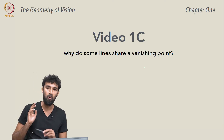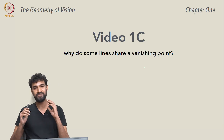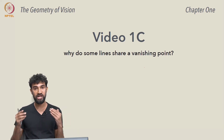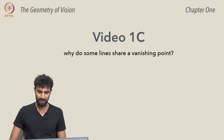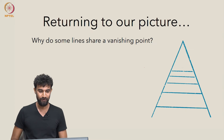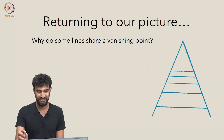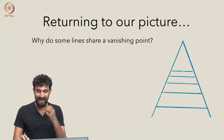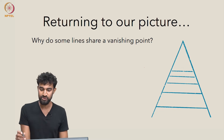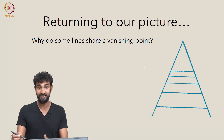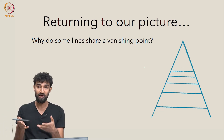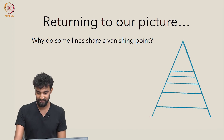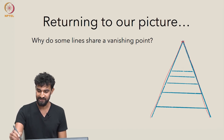So now let's answer the question of why certain lines will actually share a vanishing point in the picture plane. So let's return to our picture once again, and the question is: why do certain lines in space end up having images which share a vanishing point on the picture plane — namely this line and this line?